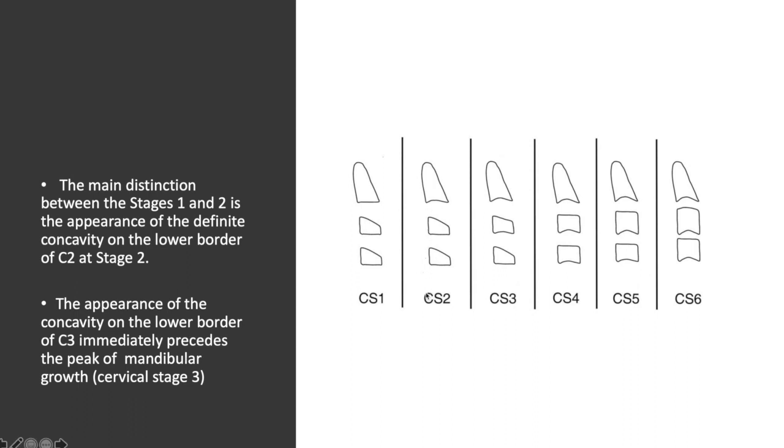Moving forward to cervical stage two, the lower border of the cervical two starts showing a concavity. This is the distinction between stage one and stage two. The second cervical spine starts to develop a concavity on its lower surface.